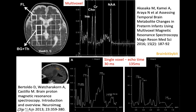You can do multi-voxel spectroscopy, where you have an actual slice of the brain with a grid in it and can look at the metabolites in each voxel — this is usually done with a long echo time. Or you can do single-voxel spectroscopy using a short or long echo time. Short echo time has more contamination but also more metabolites than long echo time, and at 135 milliseconds the lactate peak inverts.